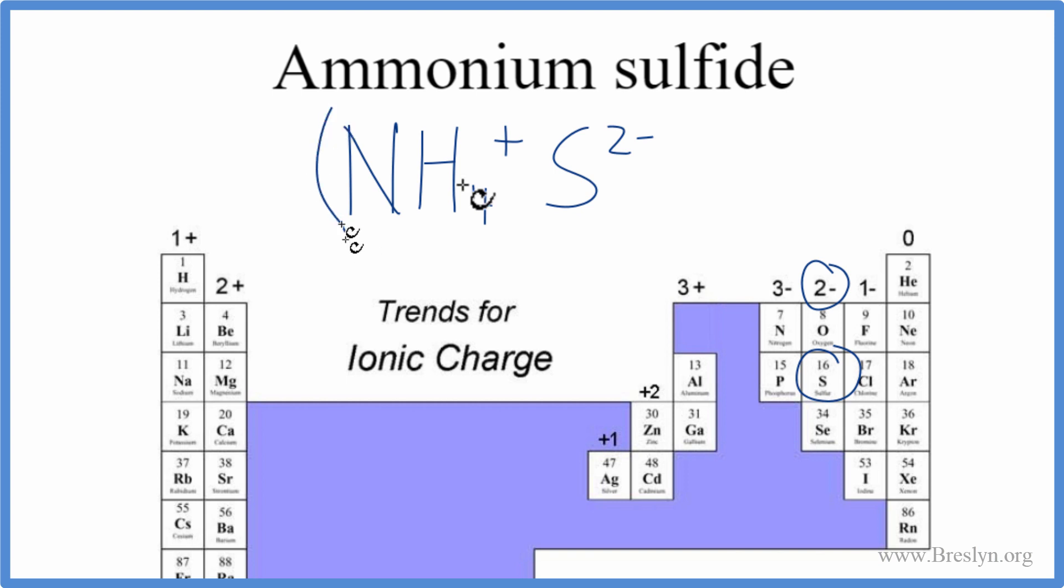The way we do it, let's put parentheses around the ammonium ion, and then we'll put a little subscript of 2. That means we have two ammonium ions. That's the formula for ammonium sulfide.